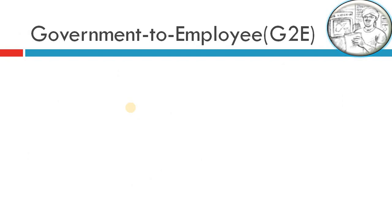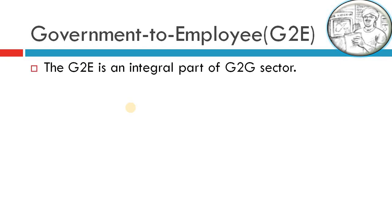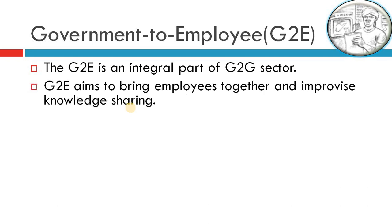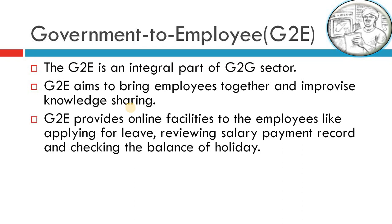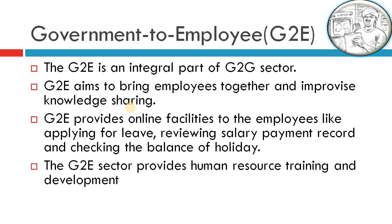The last one is Government to Employee (G2E). Here one participant is the government and the second participant is an employee in the government sector. G2E is an integral part of the G2G sector — you can assume it works inside that sector itself. G2E aims to bring employees together and improve knowledge sharing. If there are internal trainings which the government needs to organize for their employees, they can make use of it. G2E provides online facilities for employees like applying for leave, reviewing salary payment records, and checking the balance of holidays. Government employees are given an ID and password to log into the government site and check their status. The G2E sector also provides human resource training.